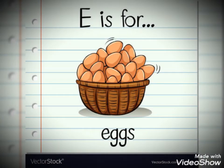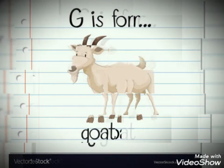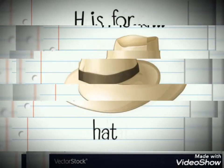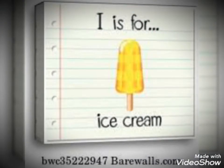E is for eggs. F is for peace. G is for gold. H is for heart. I is for ice cream.